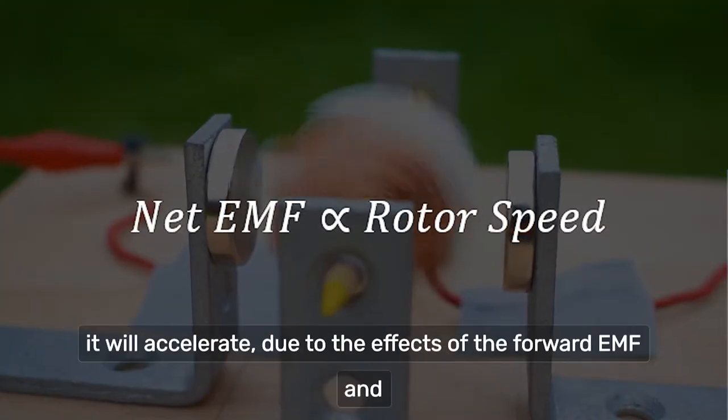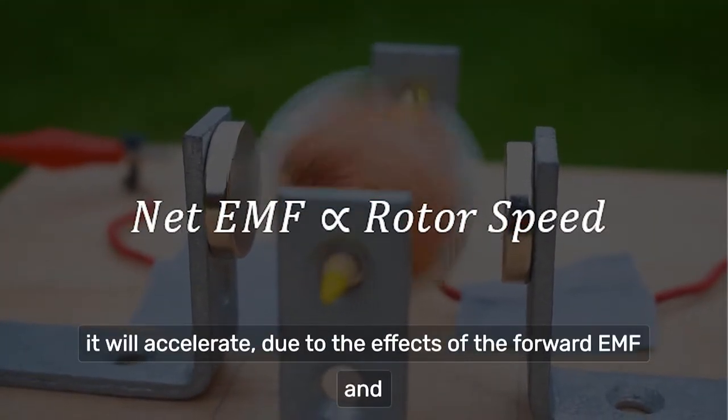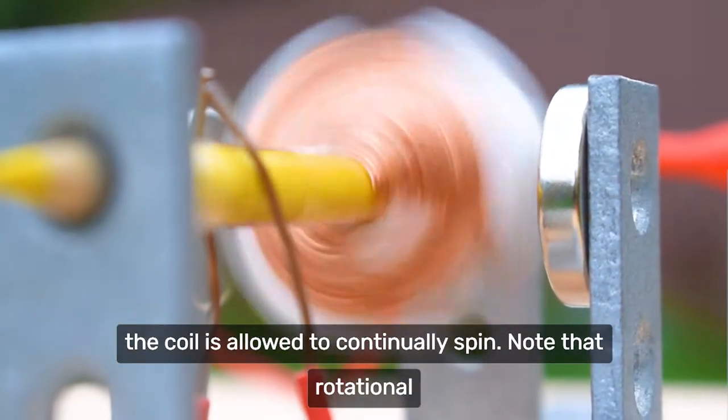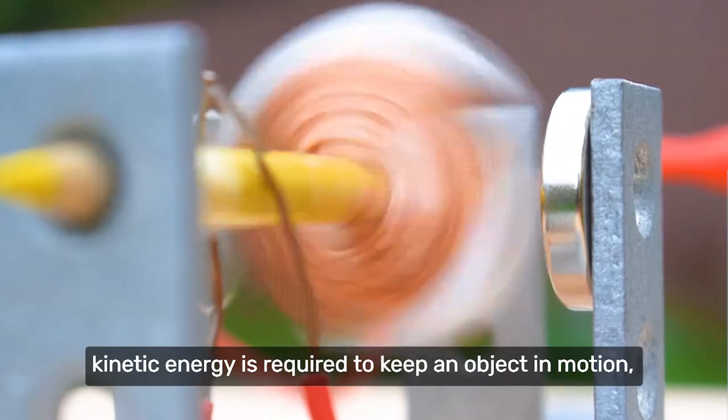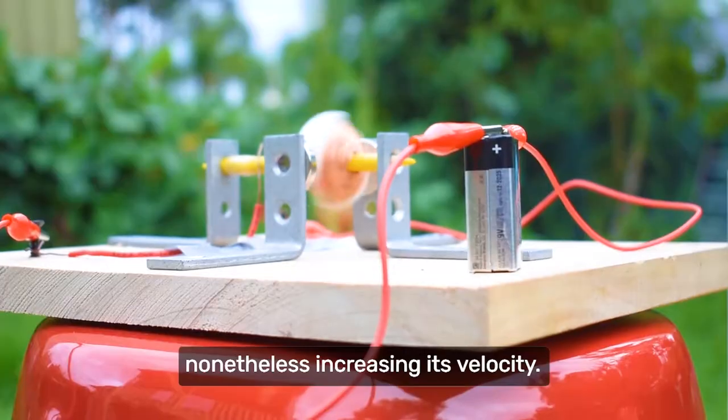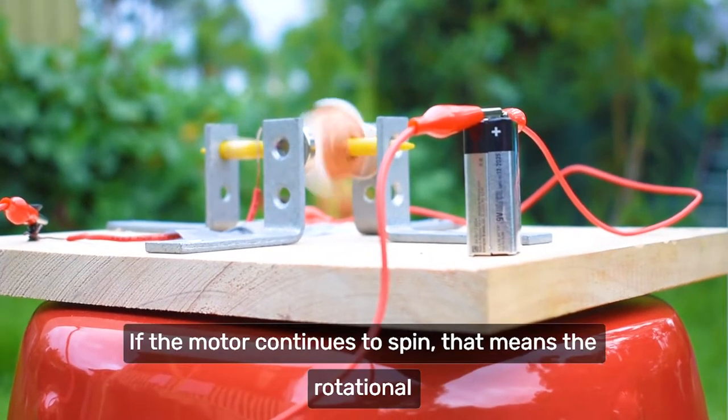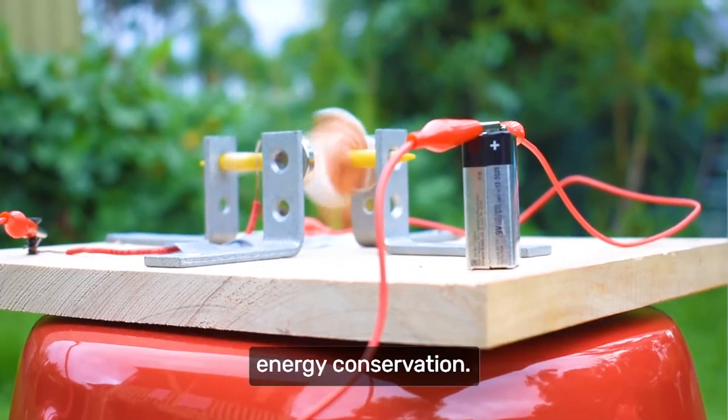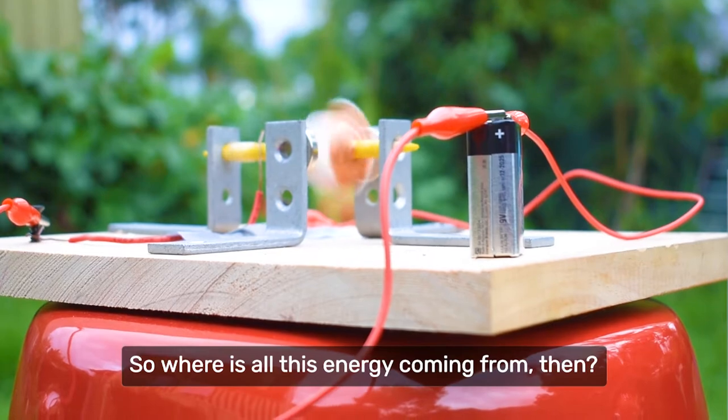As power is supplied to the coil, it will accelerate due to the effects of the forward EMF and the induced magnetic field. With the addition of the commutator, the coil is allowed to continually spin. Note that rotational kinetic energy is required to keep an object in motion, nonetheless increasing its velocity. If the motor continues to spin, that means the rotational kinetic energy increases indefinitely, breaking the law of energy conservation. So where is all this energy coming from then?